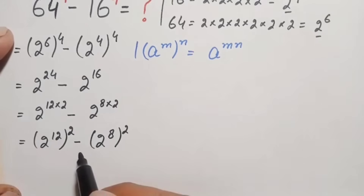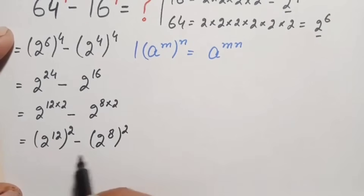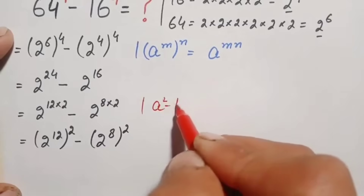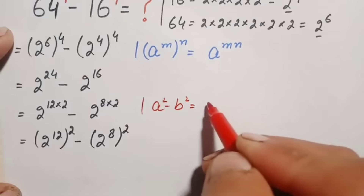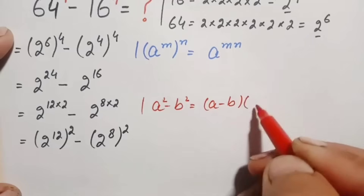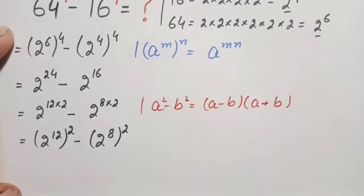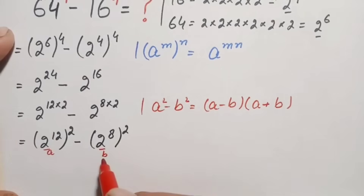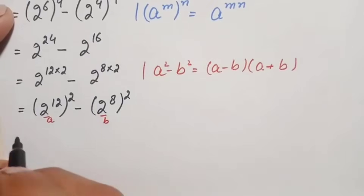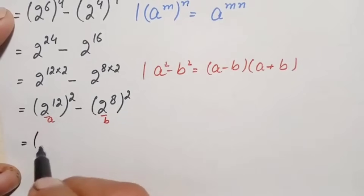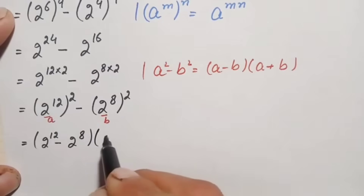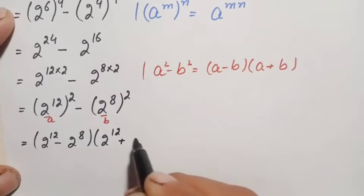Both terms are now in square form — a squared minus b squared — so we apply the algebraic identity: a² minus b² equals (a minus b)(a plus b). Here a is 2 raised to power 12 and b is 2 raised to power 8, giving us (2^12 minus 2^8) times (2^12 plus 2^8).